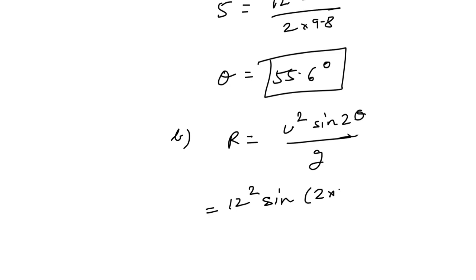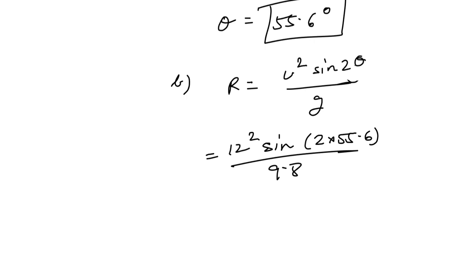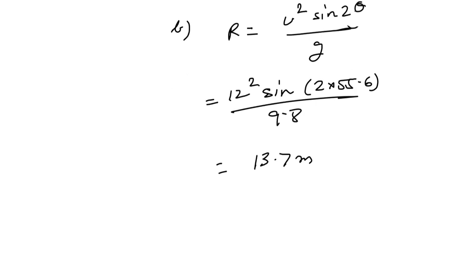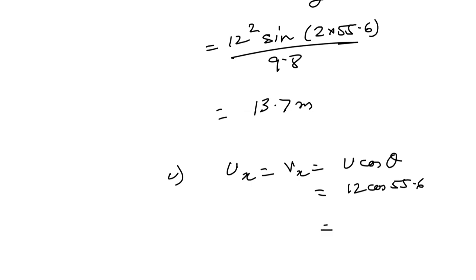So let's see how much we have here. 13.7 meters is the horizontal distance it can cover. Now see what is the speed of the ball just as it reaches the target. So it will only have the horizontal component of velocity, ux, which is also equal to vx, that is equal to u cos theta.